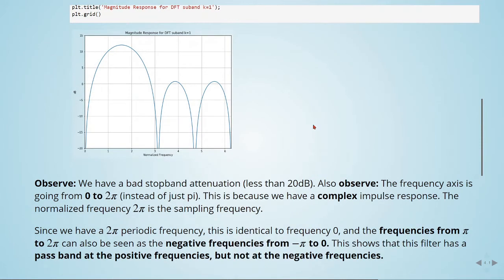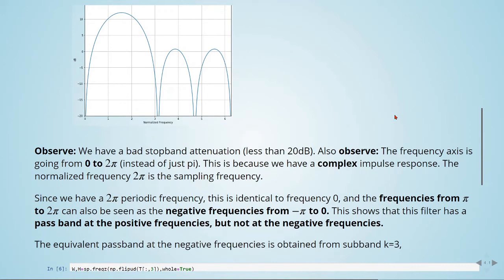Since we have a 2π periodic frequency, this is identical to frequency 0, and the frequencies from π to 2π can also be seen as the negative frequencies from minus π to 0. This shows that this filter has a pass-band at the positive frequencies, but not at the negative frequencies.